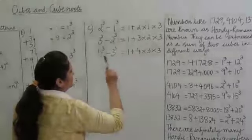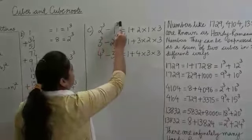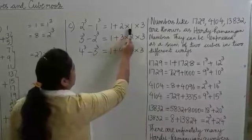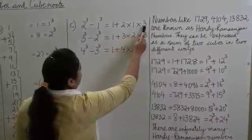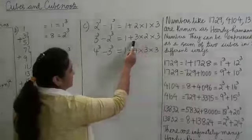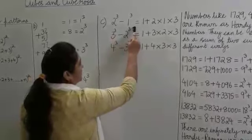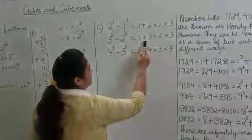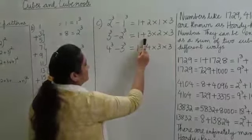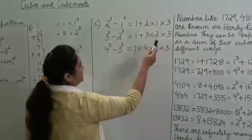So let's understand this pattern. 2 cubed minus 1 cubed can be expressed as 1 plus 2 into 1 into 3. We need to read another one to understand the pattern. 3 cubed minus 2 cubed can be written as 1 plus 3 into 2. So now we understand the structure.